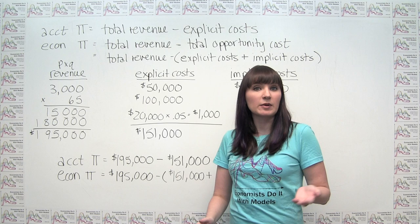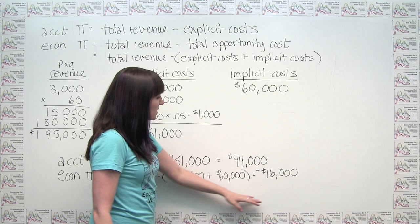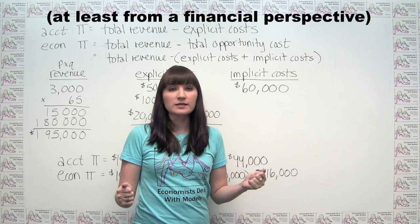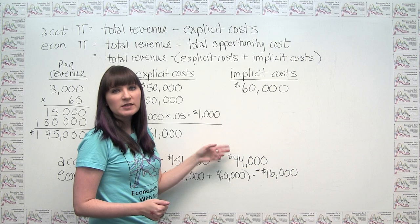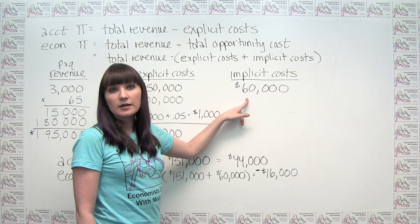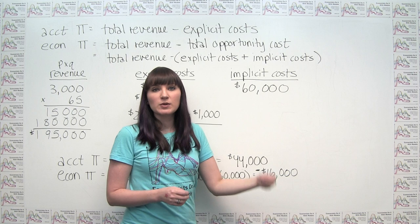This negative economic profit means the business owner could be doing better elsewhere. By opening this bike repair business, the entrepreneur is making $44,000 a year. But to make that $44,000, he had to give up a job paying $60,000 a year. Comparing these two numbers shows exactly why he could be doing better elsewhere, and explains directly the math of why economic profit is negative here.